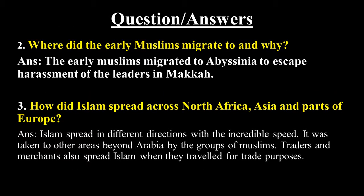The next question is: where did the early Muslims migrate to and why? Basically, when Islam first started to spread, some leaders among the early Muslims — who were new Muslims — migrated to Abyssinia so they could escape persecution from the leaders at that time.